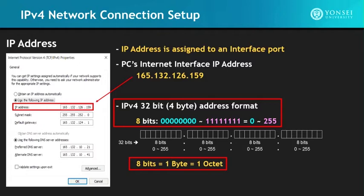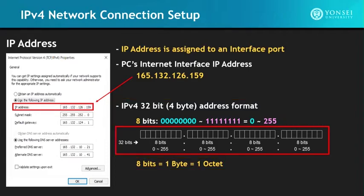An IPv4 address is 32 bits, which is 4 bytes. With 8 bits, you can represent a number from all zeros to all ones, so the number would range from 0 to 255. The address has 1 byte then a period, another byte then a period, another byte then a period, and the last byte — 4 bytes equals 32 bits of the entire IPv4 address.